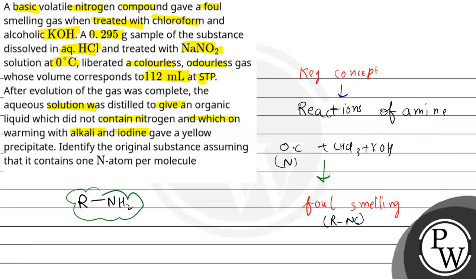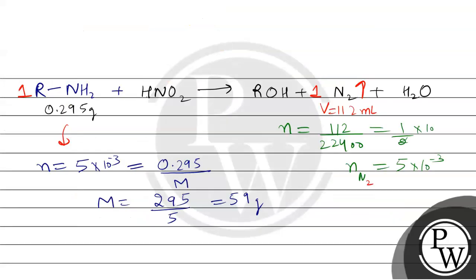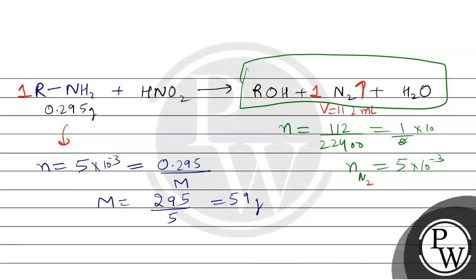After the evolution of the gas was complete, the aqueous solution was distilled to give an organic liquid — meaning the gas is completely gone. This solution is then completely distilled, and we recover the organic liquid product.